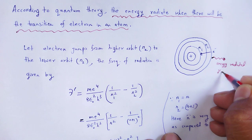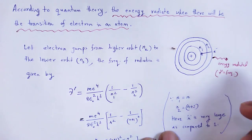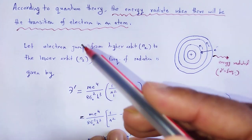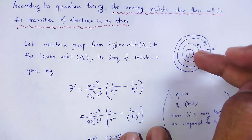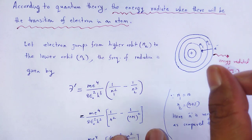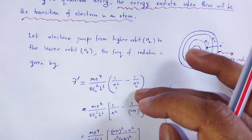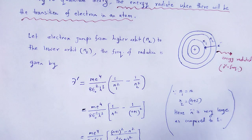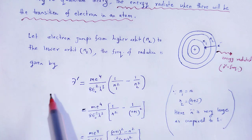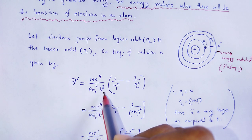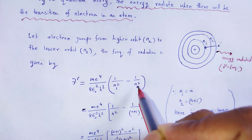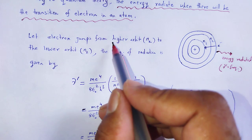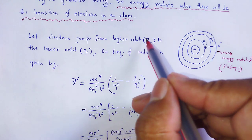Let ν' be the frequency of such radiated energy. Let the electron jump from higher energy level N₂ to lower energy level N₁. Then the frequency of radiation — an expression we have already derived when dealing with Bohr's model of hydrogen atom — is: ν' = me⁴ / (8ε₀²h³) × [1/N₁² − 1/N₂²], where N₁ is the lower orbit and N₂ is the higher orbit.